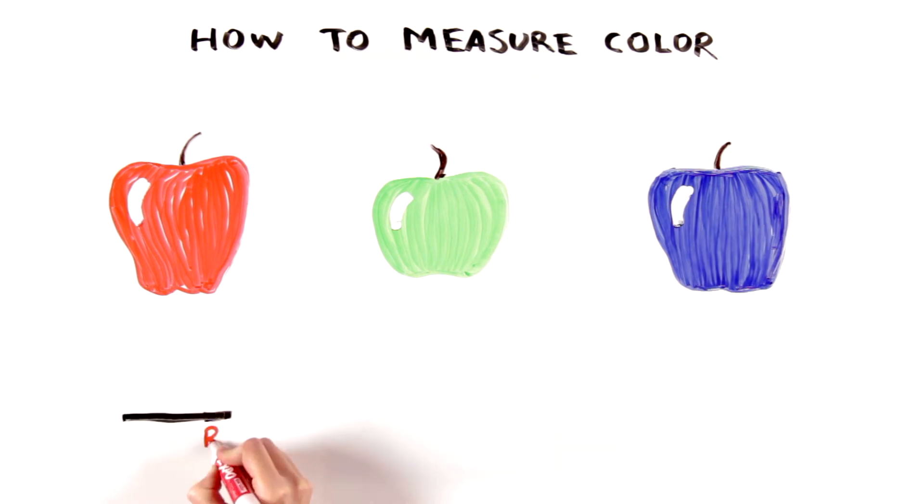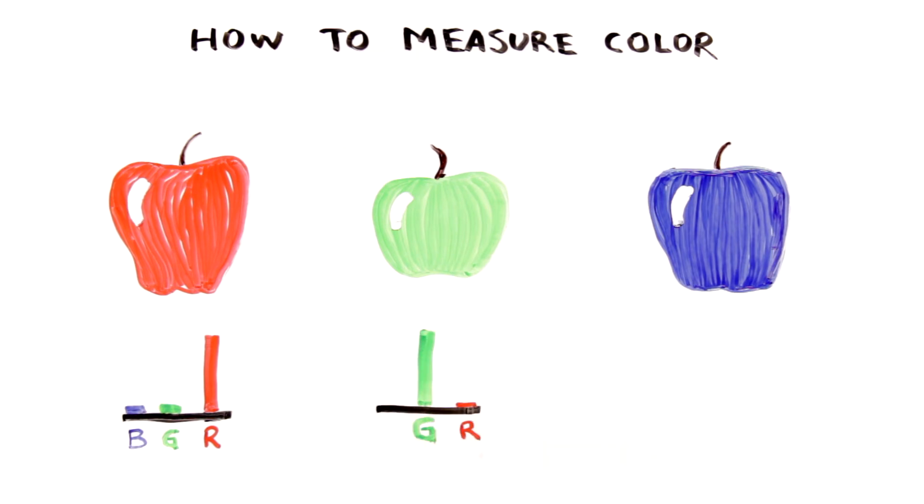When our eyes look at the red apple, we see a lot of red light reflected, but not much green or blue. For the green apple, we see more green. And for the blue, we see more blue.